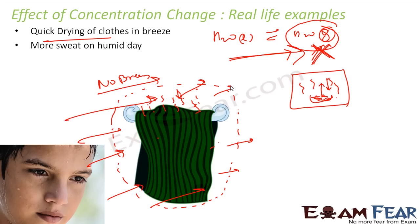Similarly, we get more sweat on a humid day. Our body needs to stay in a certain temperature range. On hot days or during heavy exercise, body temperature goes up, so the body sweats more. This sweat is nothing but water, which evaporates and cools down the body. There is an equilibrium temperature that gets disturbed, and the body sweats to restore it — trying to achieve equilibrium again.